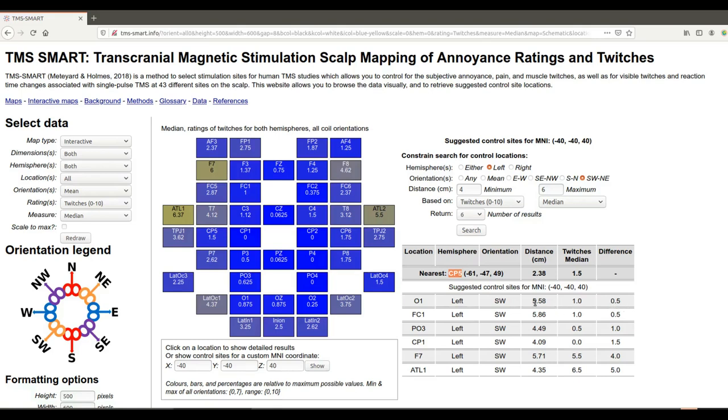So this is saying for a site which is close to CP5, you might want to choose O1 as your ideal control location, five and a half centimeters away, a relatively small difference in the number of twitches.